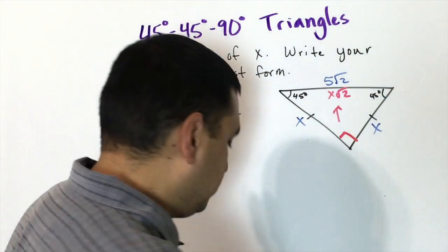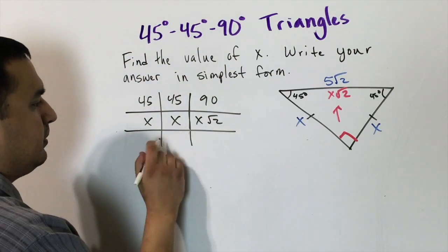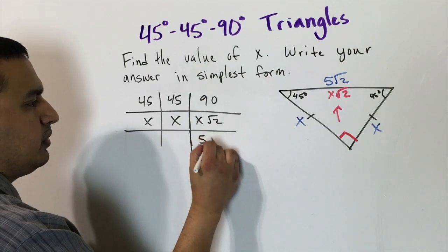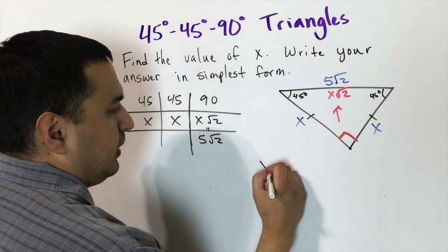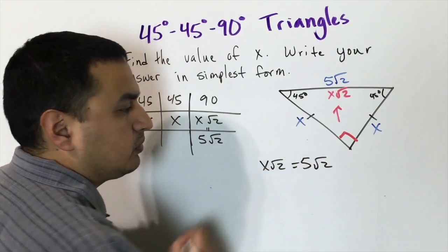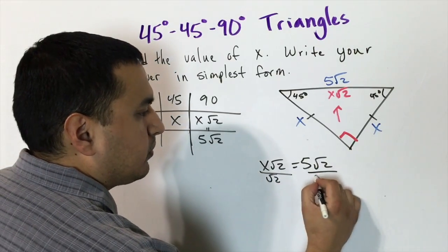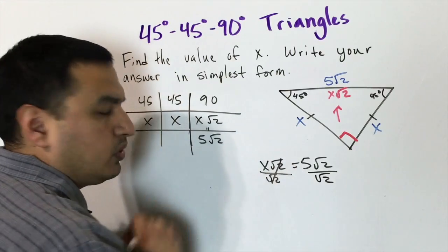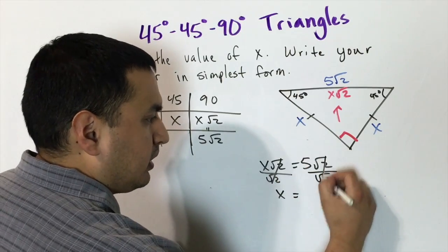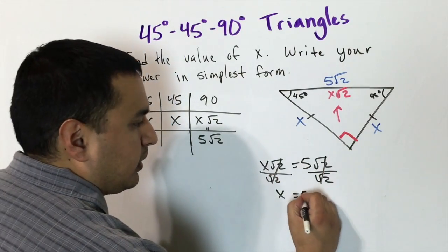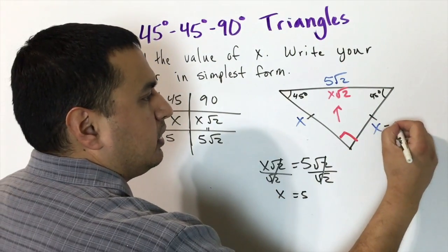Since the hypotenuse is 5√2, we set x√2 = 5√2. Dividing both sides by √2 — since √2/√2 = 1 — we get x = 5√2 ÷ √2 = 5. So each leg has a side length of 5.